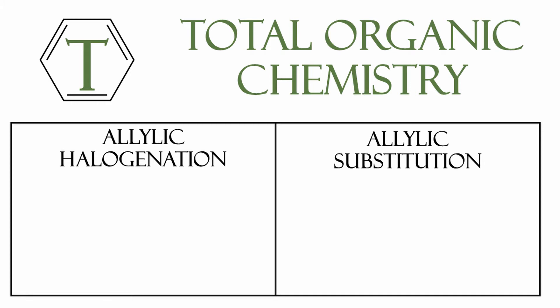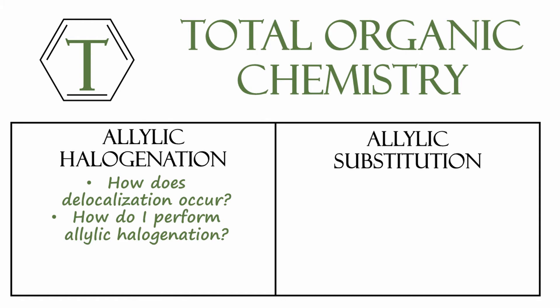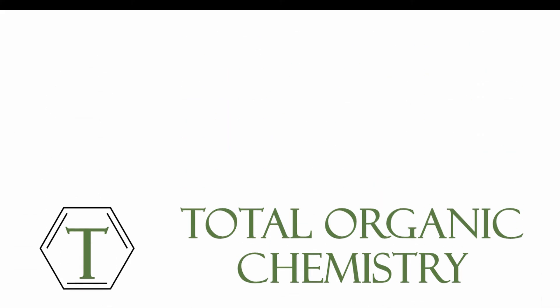By the end of this video, the questions that you should be able to answer are: how does delocalization of electrons occur, how do I perform allylic halogenation, and how do allylic halides undergo SN2 reactions. If you'd first like a review of alkenes that are non-conjugated, please go ahead and subscribe to my channel and take a look at my video on that topic.